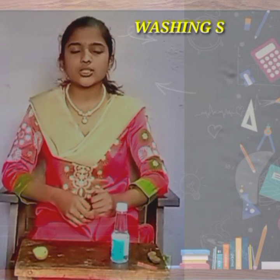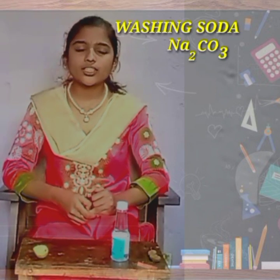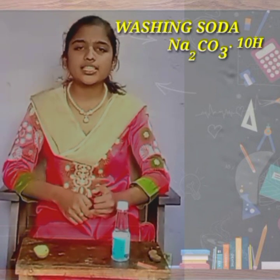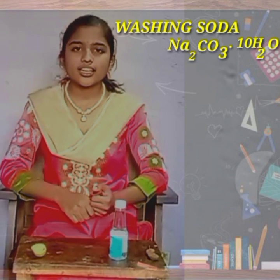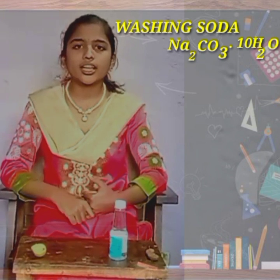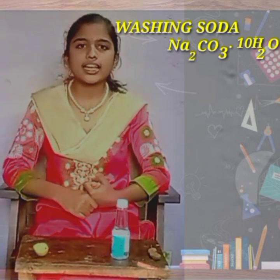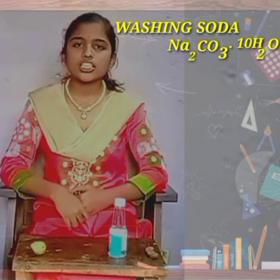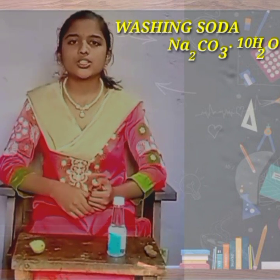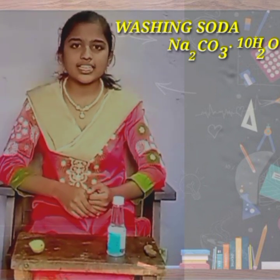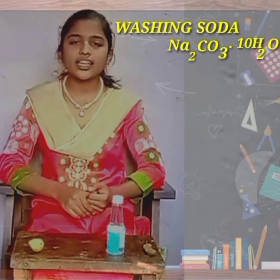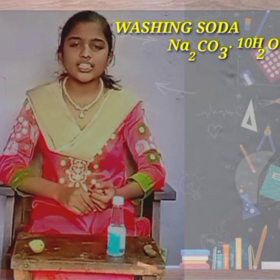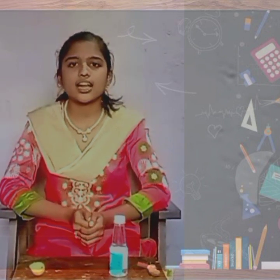And then washing soda — Na2CO3·10H2O — sodium carbonate with 10 molecules of water — is known as washing soda. Washing soda is used in soap, paper, and glass industries, and it is used as a cleaning agent for domestic purposes. So these are some of the key points about acids, bases, and salt.